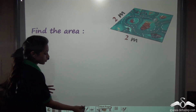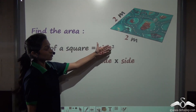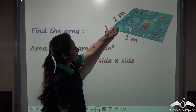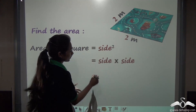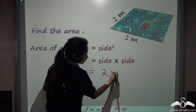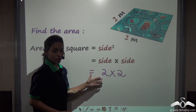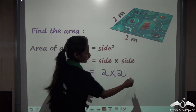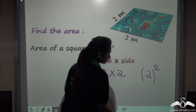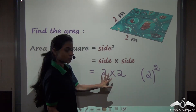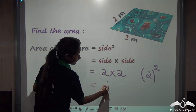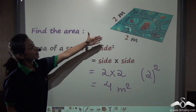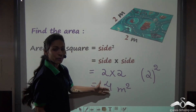We know that the area of a square is side squared, or side into side. Similarly, the area of the square carpet will be side into side, which is 2 into 2. Now we know that 2 into 2 represents 2 squared. So 2 squared is 2 into 2, and we can say that the area of this carpet is 4 metres square.